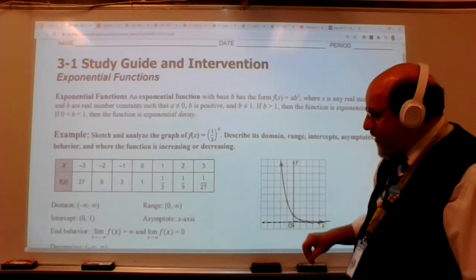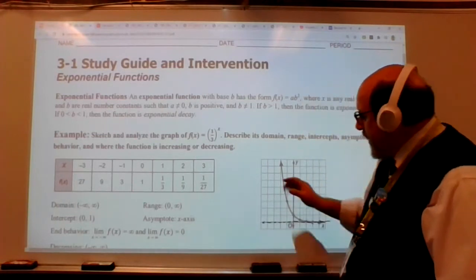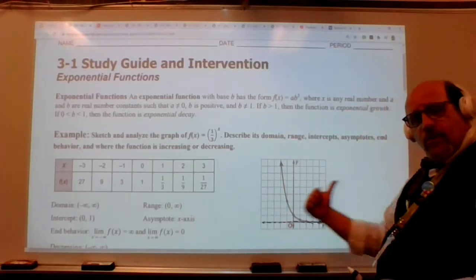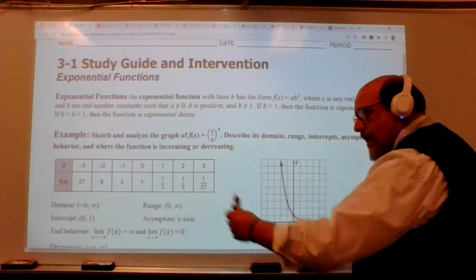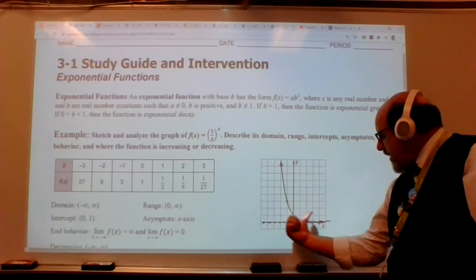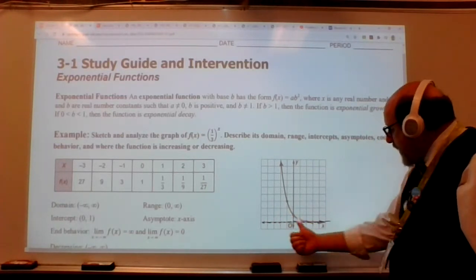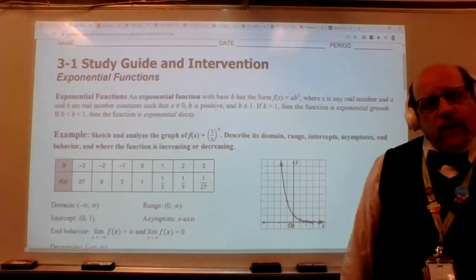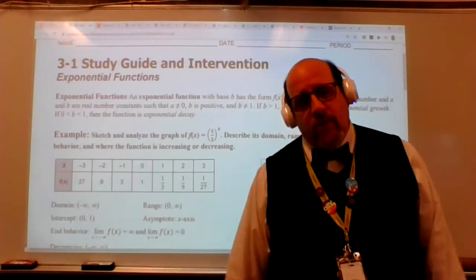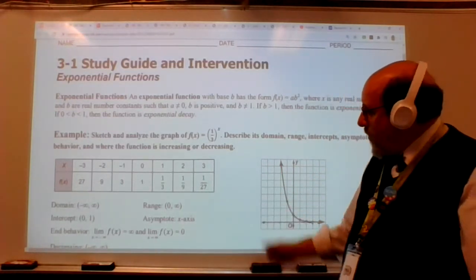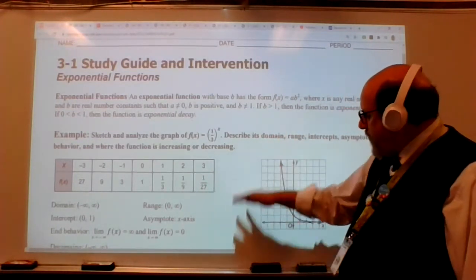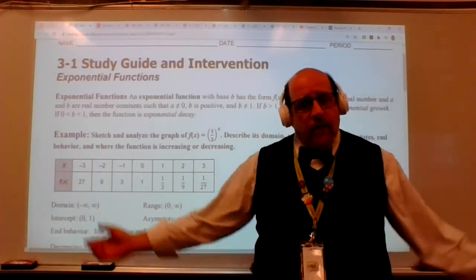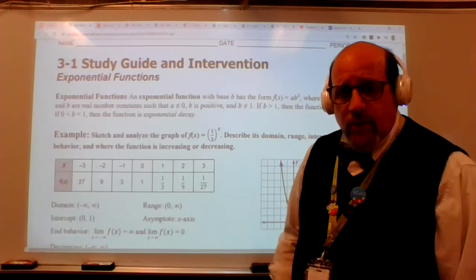Other than that, we talk about end behaviors. As x approaches negative infinity, this end behavior goes up toward positive infinity. And as x approaches infinity going this way, remember when we talk about end behaviors, we go out that way. As x approaches infinity, this is trying to approach zero but it never really gets it. Why? Because there's a one in the numerator. Never gets to zero. When we talk about what's happening from negative infinity to positive infinity, this graph is always decreasing left to right.